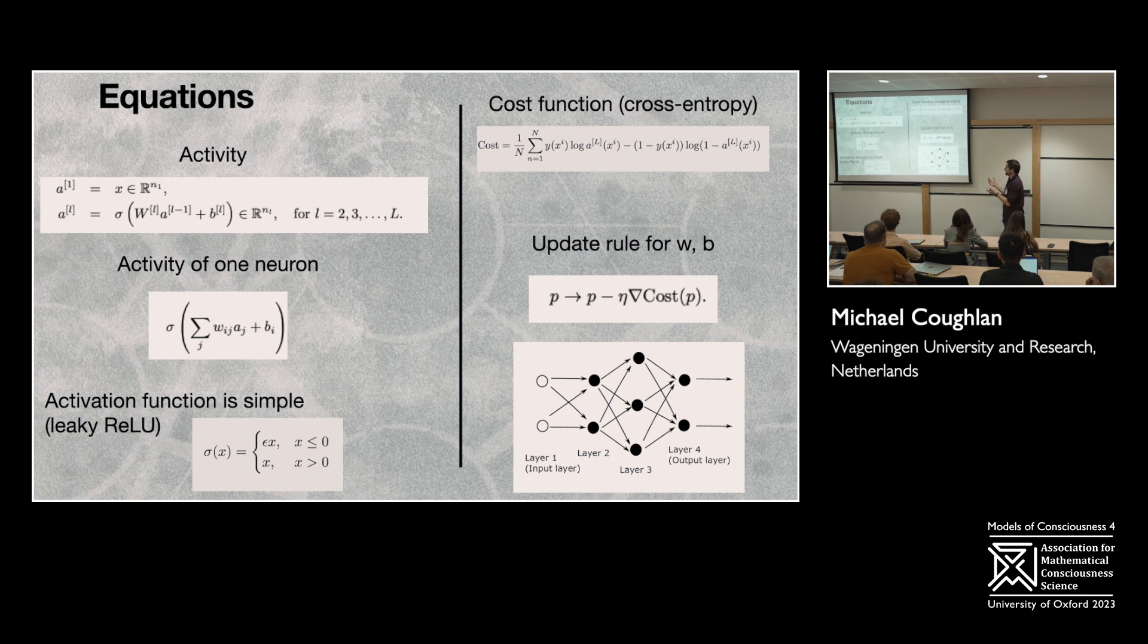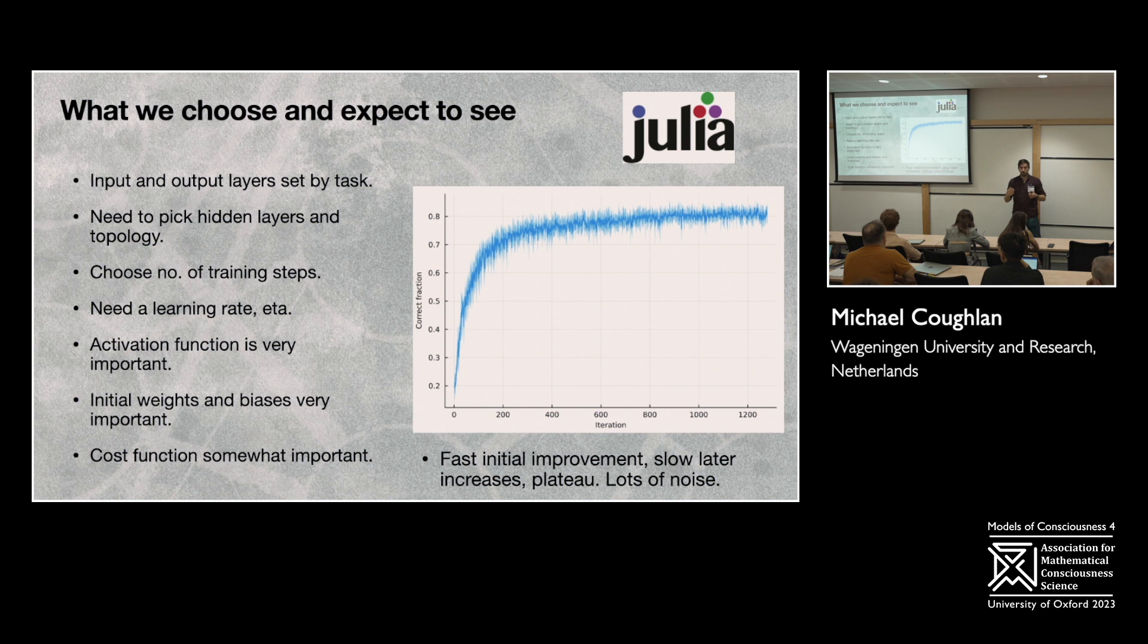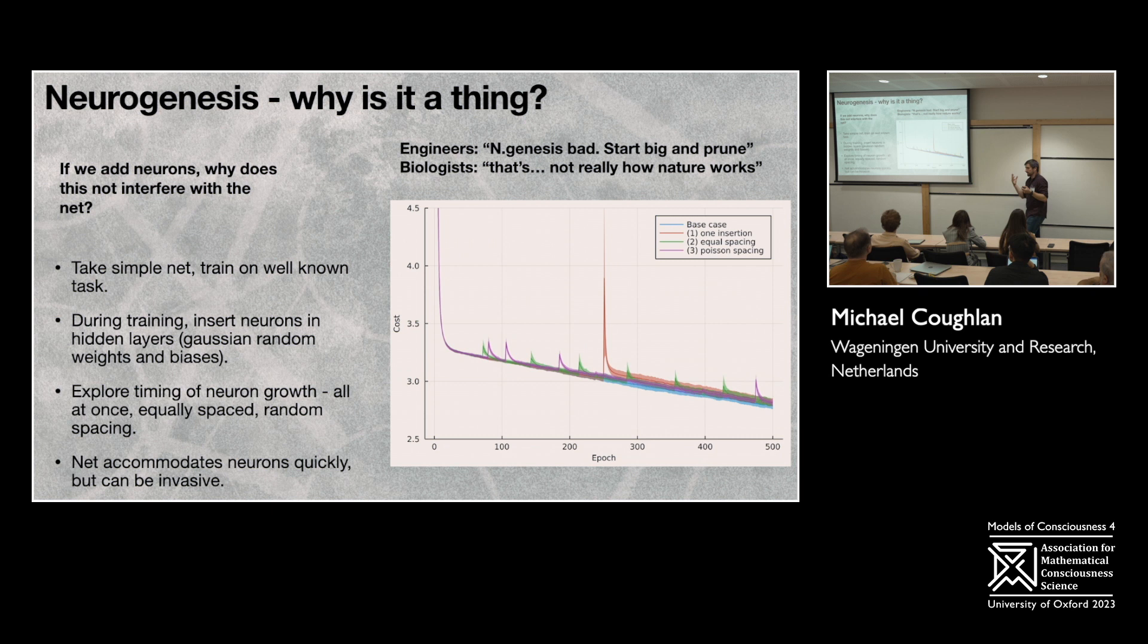I'll rush through this very quickly, but I'm keeping things very simple. I'm using a thing called Leaky ReLU as an activation function and a cost function, a thing called cross entropy, which people can ask about later. So the kind of experiments that I do is just basically take a simple computer vision task like the MNIST data set, train a neural network in that. I've written everything in Julia so that I know all of the functions that I've used rather than using something like PyTorch, which would obviously be much faster. And then what we expect to see in an experiment is that it'll train very quickly and then plateau with a lot of noise.